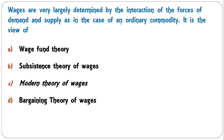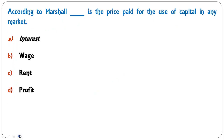Wages are very largely determined by the interaction of the forces of demand and supply, as in the case of an ordinary commodity. This is the view of which theory — wage fund theory, subsistence theory, modern theory, or bargaining theory? The correct answer is modern theory, which talks about demand and supply forces. C is the correct answer.